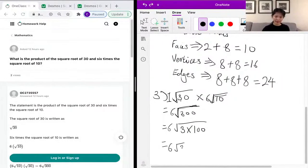We can separate the two by root 3 times root 100, and we know that the square root of 100 is just 10. So you have 6 root 3 times 10, which is 60 root 3, and that is our final answer right over here—that is the product of root 30 and 6 root 10.